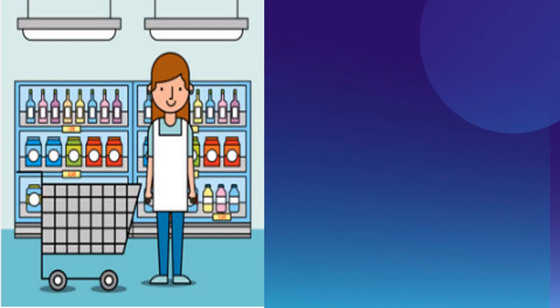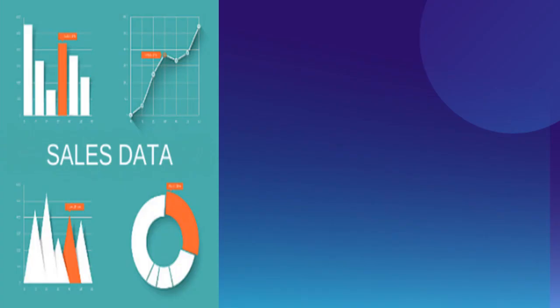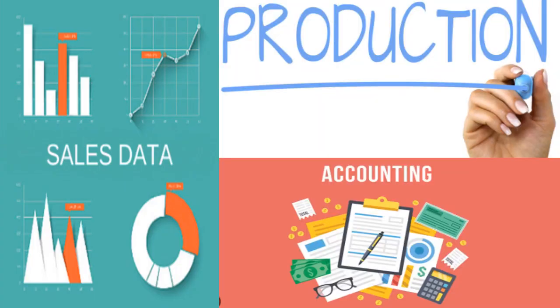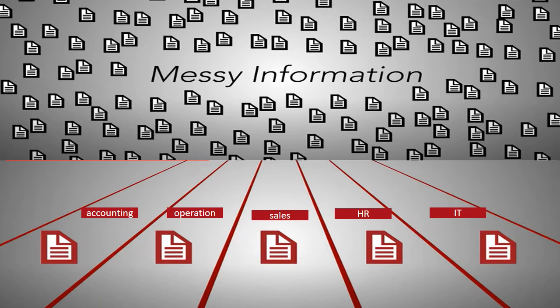For example, in a supermarket, you do not need to find an employee and ask where the soap or beverages are located, because the supermarket is organized into aisles to make it easier for customers to find a specific product. Now imagine that these items in the supermarket are your business data, and you need to collect sales, production, and accounting information. Most probably, you will go to three different departments to ask for this information and have someone compile it for you. This is where BI comes in — it takes your unorganized information and turns it into a tidy and accessible form, like supermarket aisles, so you can navigate this data on your own without relying on others.